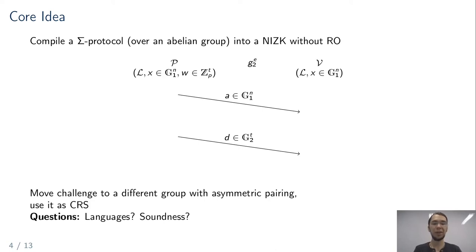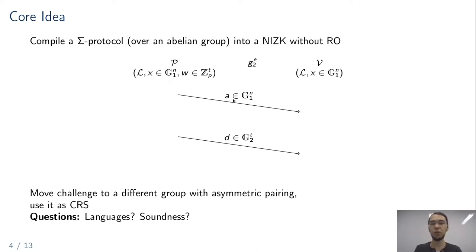This is also where the restriction to algebraic languages comes from: algebraic languages only live over a single group. However, for something like pairing product equations where the language spans G1 and G2, the split between the challenge being hidden in one group and the first flow being in G1 doesn't hold anymore, since the first flow would be in G1, G2, or even GT. This breaks the divide between challenge and commitment, and we don't know how to show soundness in that setting.